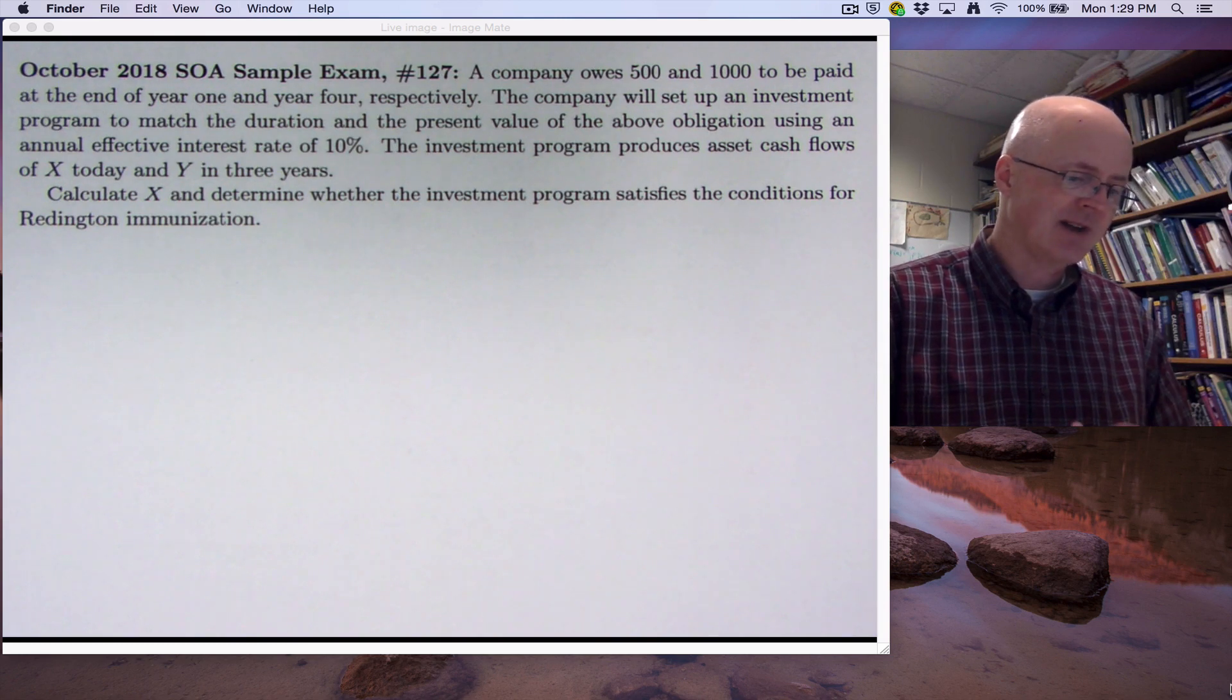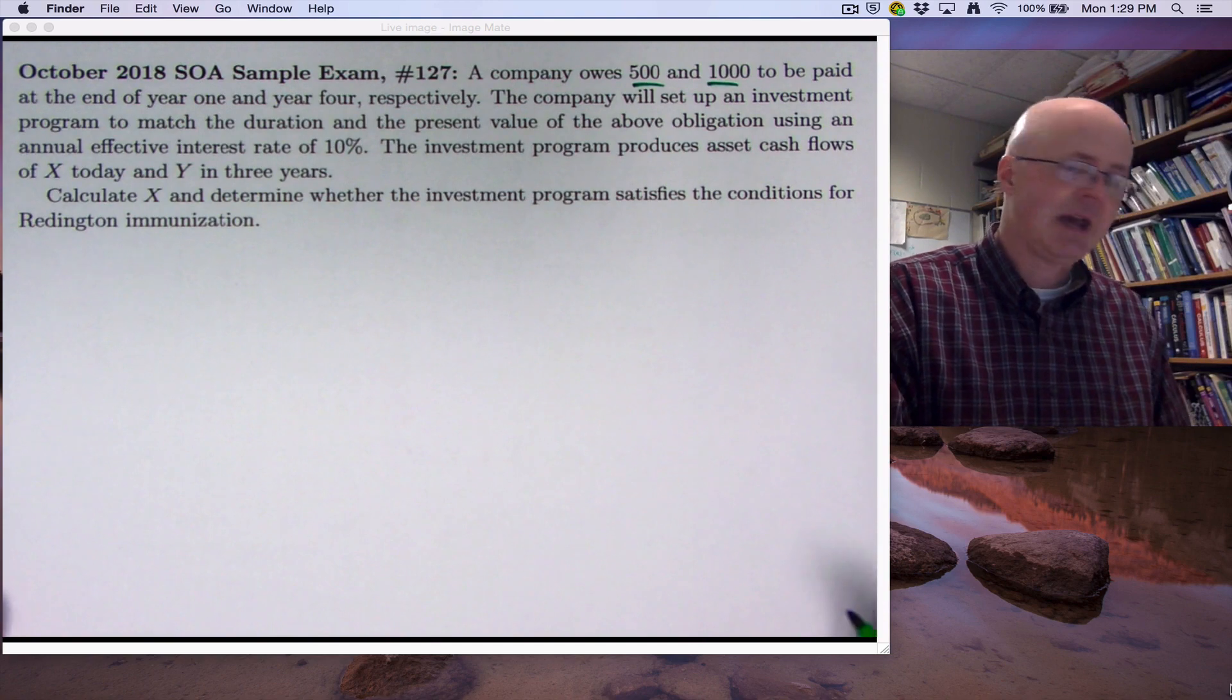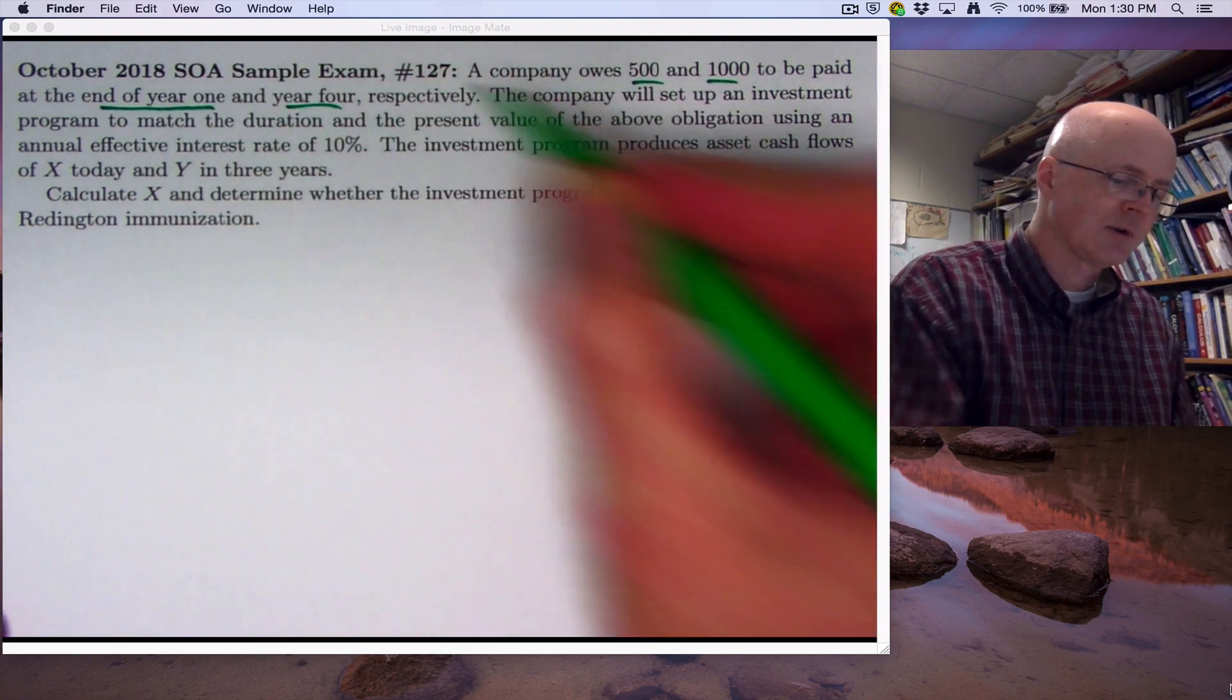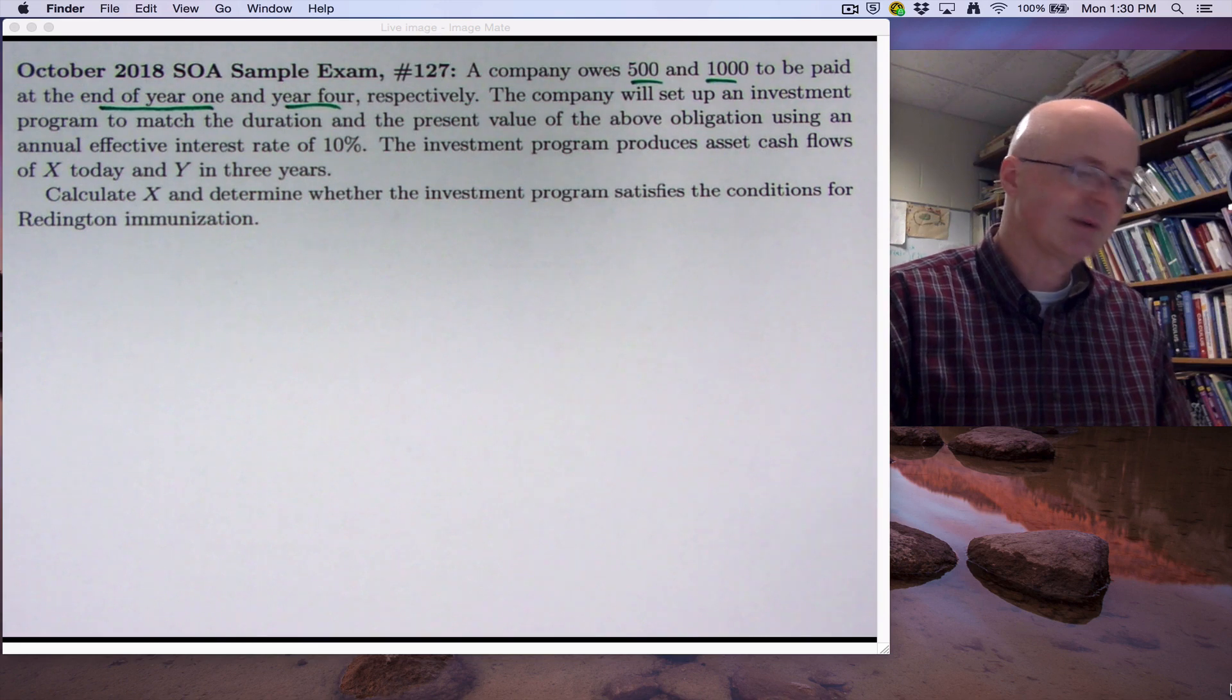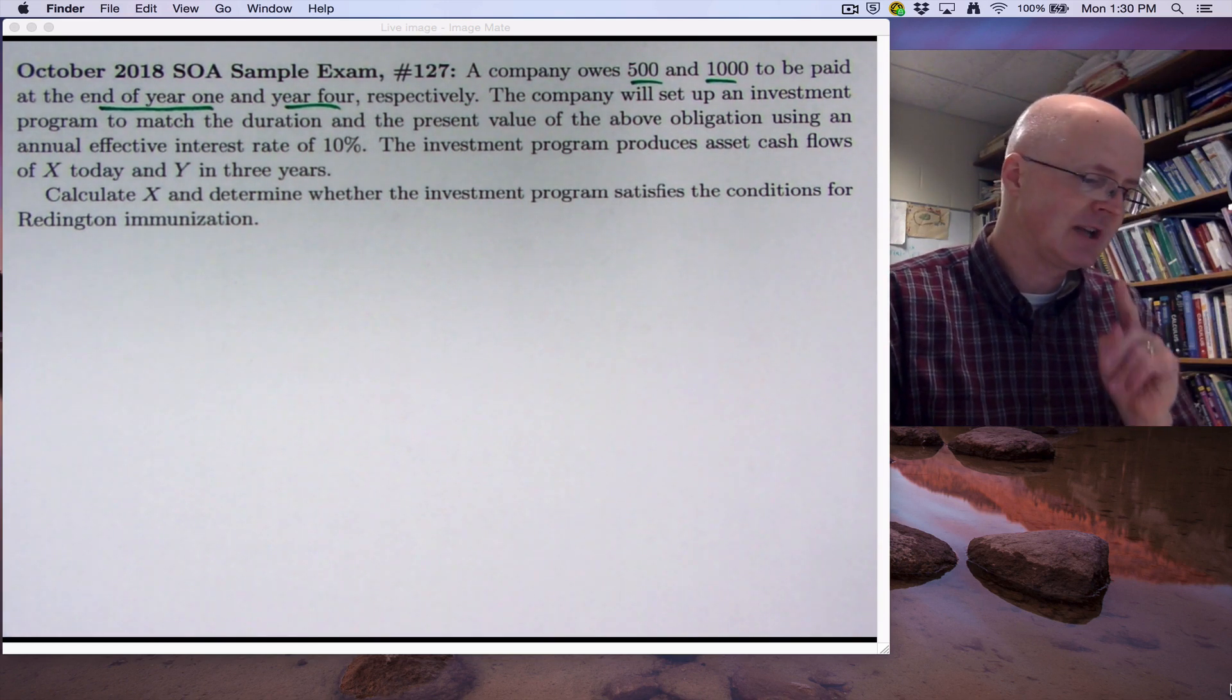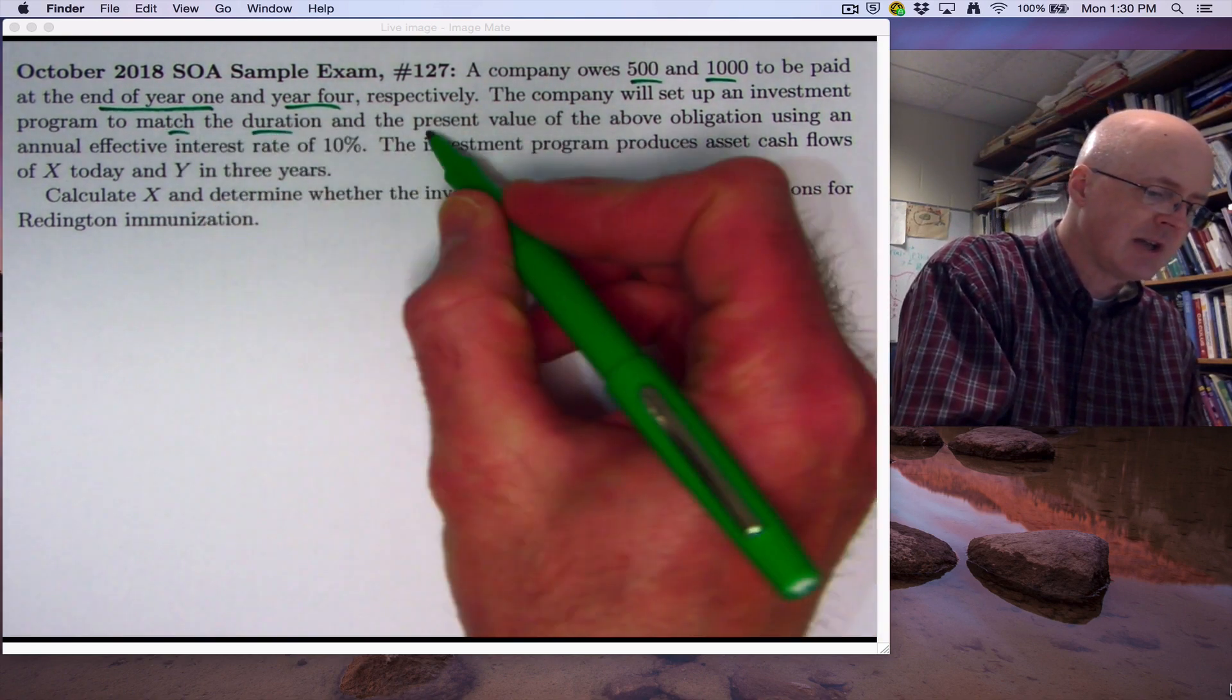So the problem statement is as follows. A company owes $500 and $1,000 to be paid, so these are liabilities, at the end of year one and year four, respectively. The company will set up an investment program to match the duration and the present values of the above obligation. Match duration and present values.